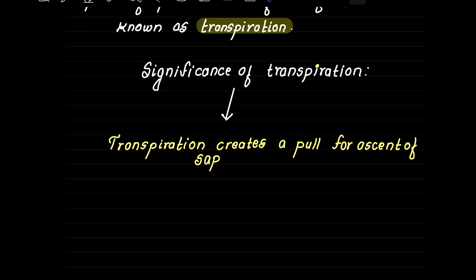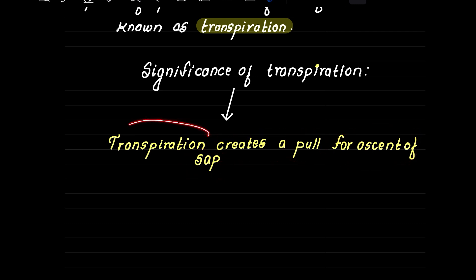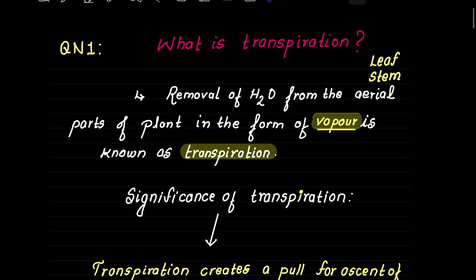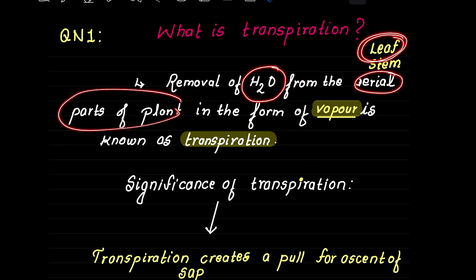What is the significance of transpiration? One major significance is that transpiration creates a pull for the ascent of sap. It creates a pool for ascent of sap.